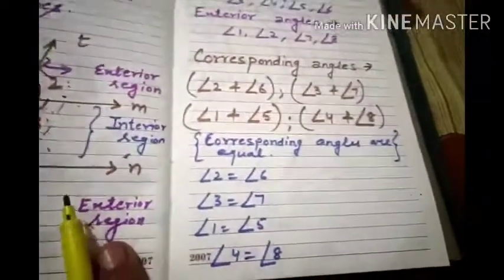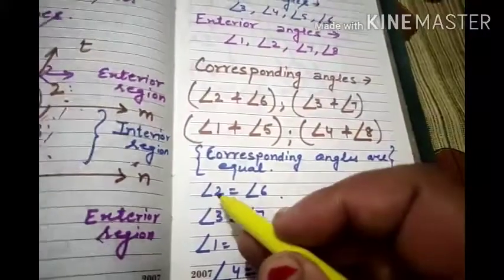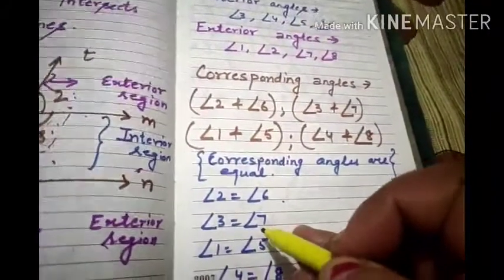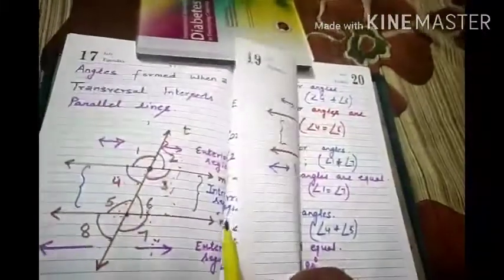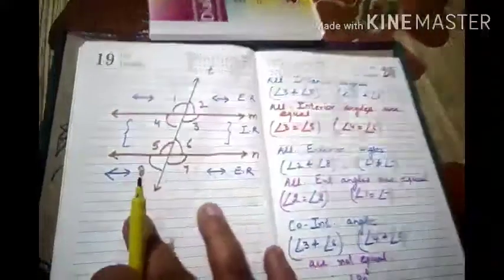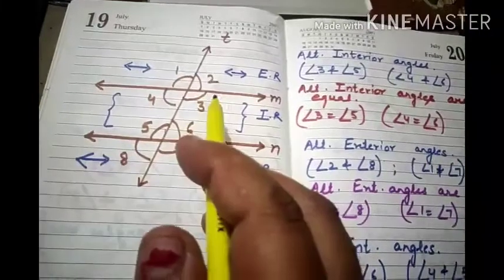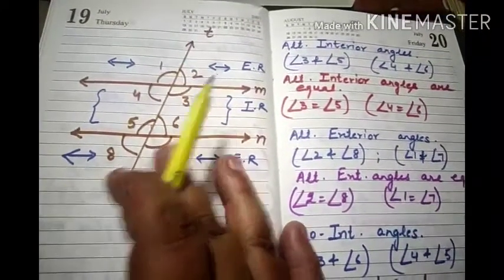We know that corresponding angles are equal: angle 2 equals angle 6, angle 3 equals angle 7, angle 1 equals angle 5, and angle 4 equals angle 8. So we have covered interior angles, exterior angles, and corresponding angles.